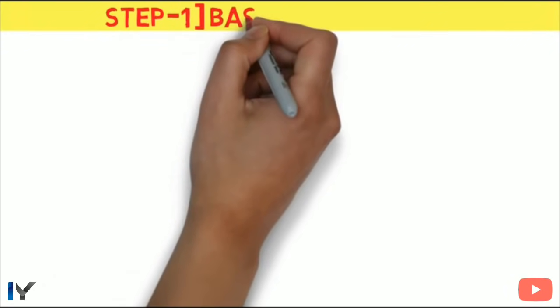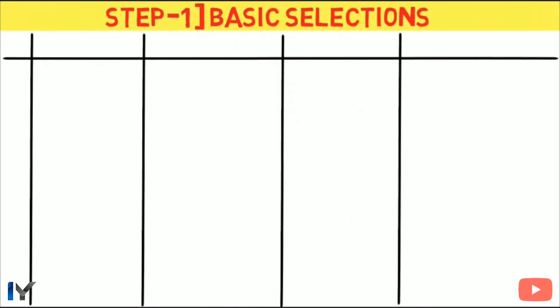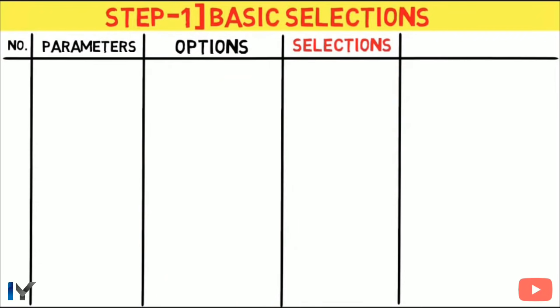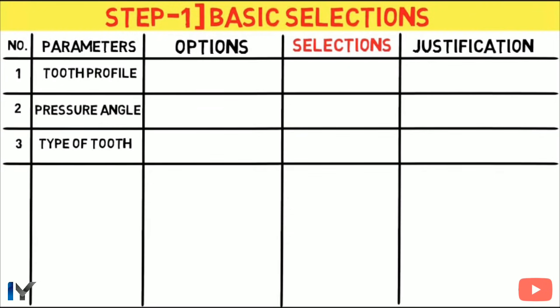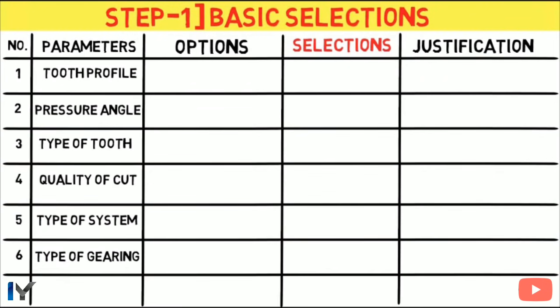Step 1: Basic selections. Here we have to assume or select some parameters on which we are going to design our spur gear, among the different options available like tooth profile, pressure angle, type of tooth, quality of cut, type of system, type of gearing, and gearbox layout. These should be given in the question itself, but if not given, we have to assume them by ourselves, giving an appropriate reason for each choice.